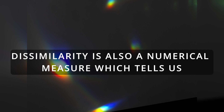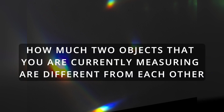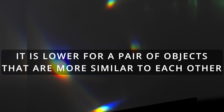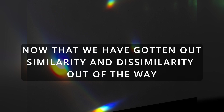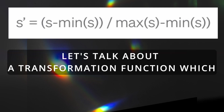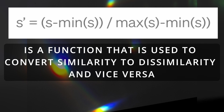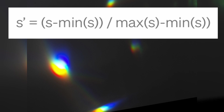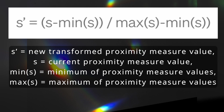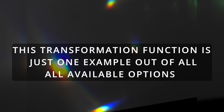Dissimilarity is also a numerical measure which tells us how much two objects are different from each other. It is lower for a pair of objects that are more similar, and it usually ranges between zero and infinity. Now, let's talk about a transformation function, which is a function used to convert similarity to dissimilarity and vice versa, or to transform one proximity measure to fall into a particular range of numbers. The formula on screen shows s-dash as your new transformed proximity measure value, s as your current proximity measure value, min(s) as the minimum and max(s) as the maximum of that current value.